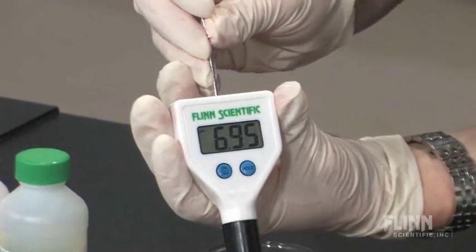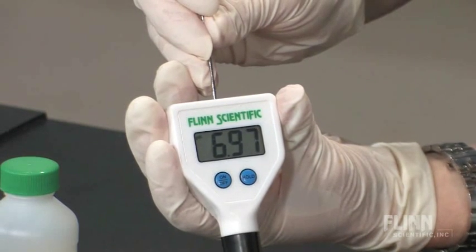Use a small screwdriver to adjust the calibration screw on the top of the pH meter until the display reads 7.